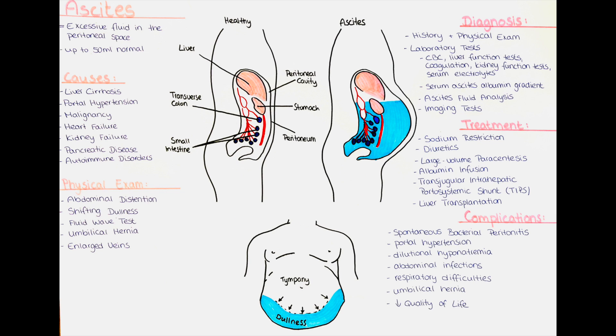We can also perform a serum ascites albumin gradient, often abbreviated as SAAG, calculation by subtracting the ascites fluid albumin level from the serum albumin level. This serum ascites albumin gradient helps to differentiate between portal hypertension-related ascites, where the SAAG is equal to or higher than 1.1 grams per deciliter, and non-portal hypertension causes, where the gradient is lower.